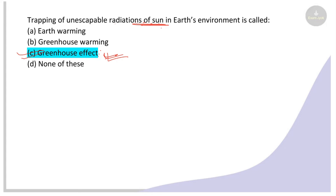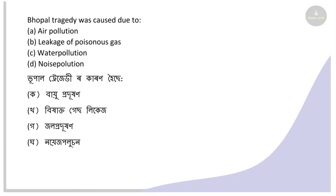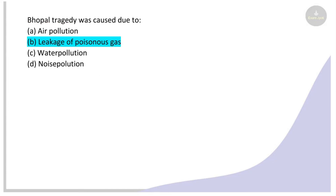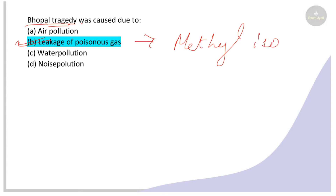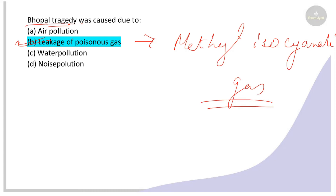Next: The Bhopal gas tragedy was caused by what? Options: air pollution — leakage of poisonous gas, water pollution, noise pollution. The right answer is leakage of poisonous gas. The Bhopal gas tragedy occurred due to leakage of methyl isocyanate gas, which caused the disaster.